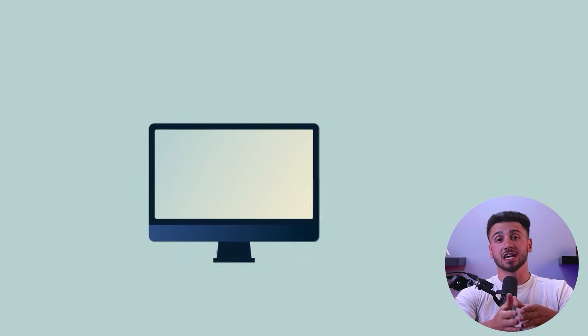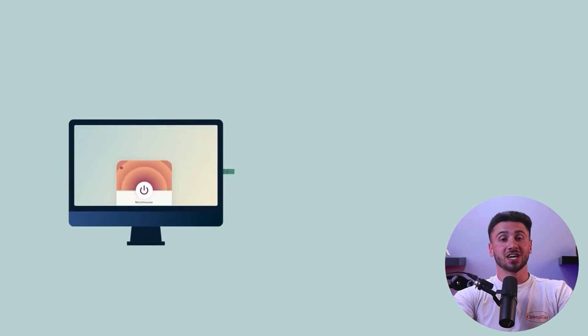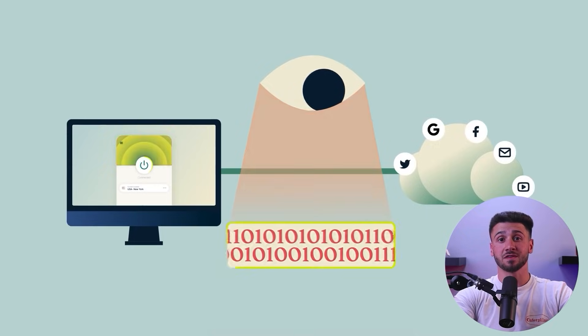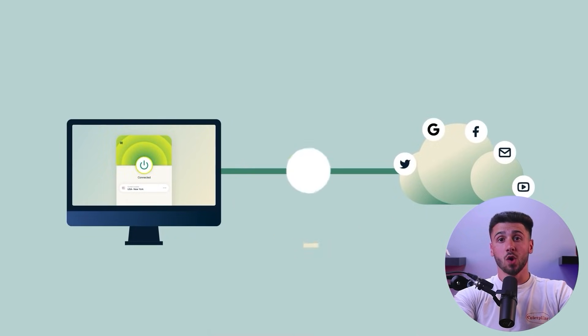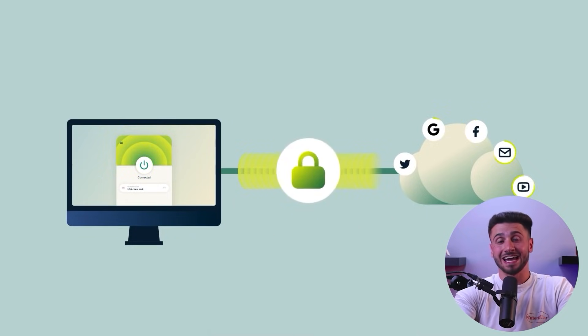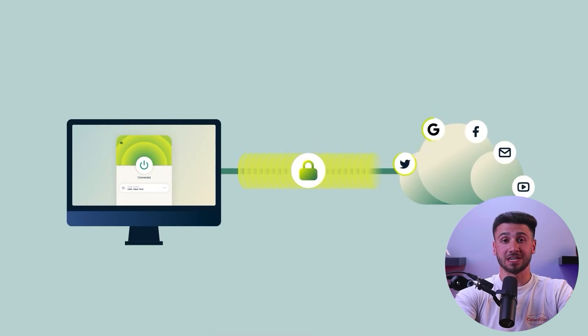A VPN, or virtual private network, is a service that allows you to connect to the internet securely and privately. When you use a VPN, your internet connection is routed through a remote server provided by the VPN service, which encrypts your online activity and hides your IP address.